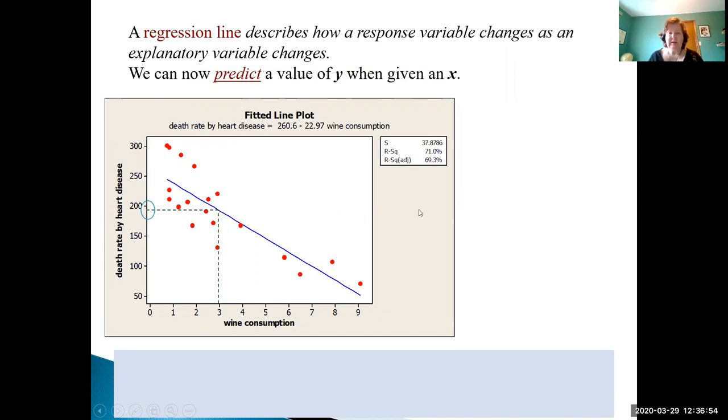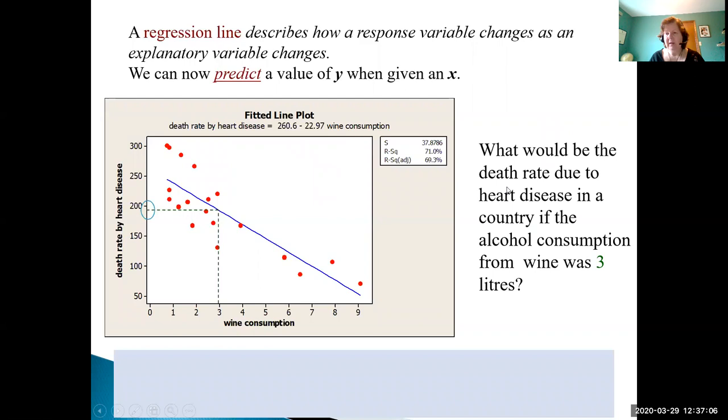This is a result from Minitab software, a fitted line plot analysis. We have the equation death rate by heart disease is 260.6 minus 22.97 times wine consumption. So if we asked the question, what would be the death rate due to heart disease if the alcohol consumption from wine was 3 liters?